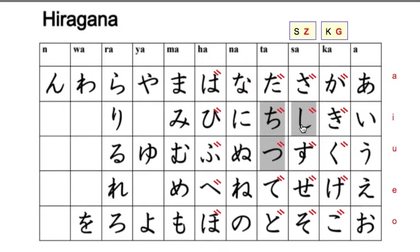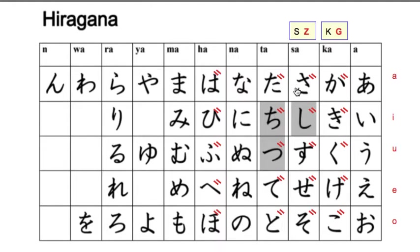Shi is weird though — it's an exception. Remember that shi is already strange without accents. You'd expect sa, si, su, se, so, but it's already 'shi'. When you add accents, it also does not follow the pattern. You'd expect a Z sound — za, zi, zu, ze, zo — but it is not. It becomes a 'ji' sound, as in 'oji-san'. So the gray ones are weird to begin with and don't follow the pattern. They're rule breakers when you add the ten-ten accents. Be careful with this one: ji.